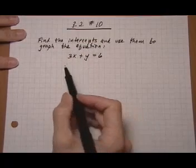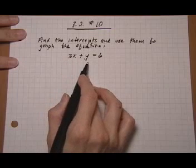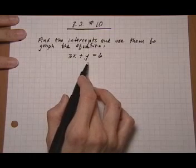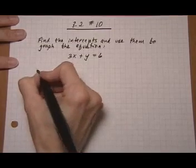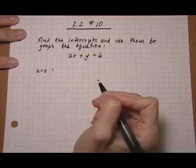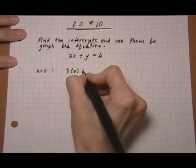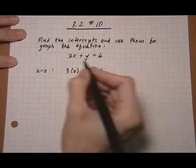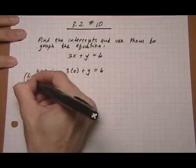To find the intercepts, we need to set x equal to zero, which will give us the y-intercept, and then set y equal to zero, which will give us the x-intercept. So x equals zero: we get 3 times 0 plus y equals 6, and remember this is to find the y-intercept.